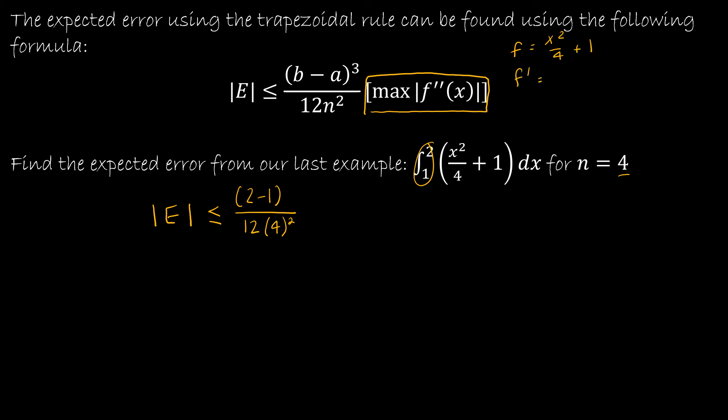So my function was x squared over 4 plus 1. If I wanted to find f prime, that would give me 2x over 4 or x over 2, or 1 half x, however you'd like to think of it, plus 0. If I took f double prime, so the derivative of the derivative, I would just end up with 1 half. So in this case, because there's no x value here, it's just x to the 0, there's no minimum or maximum f double prime value. It's just 1 half.